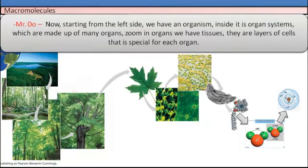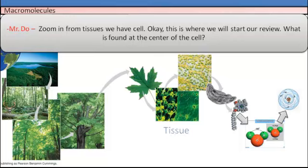Now, starting from the left side, we have an organism. Inside it is organ systems, which are made up of many organs. Zooming into organs, we have tissue. They are layers of cells that are special for each organ. Zooming in from the tissue, we have cells.